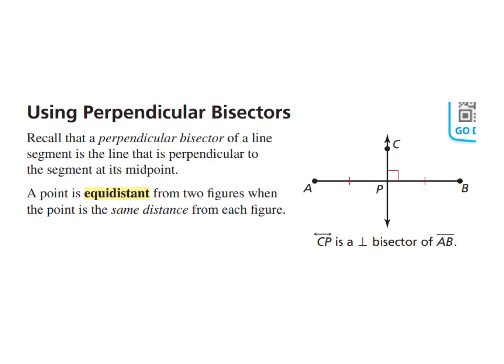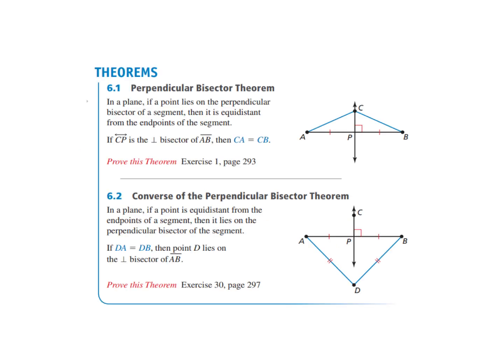Just to recap from the part 1 video, we talked about perpendicular bisectors. A perpendicular bisector is a line that intersects a line segment, and when you have something that bisects, it divides it into two equal parts. The perpendicular bisector also creates a 90-degree angle with that line segment. The perpendicular bisector theorem says that if a point is on the perpendicular bisector, it's going to be equidistant from the endpoints of the line segment that it bisects.